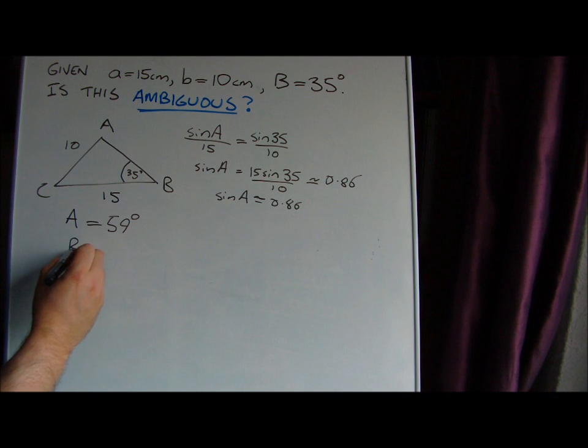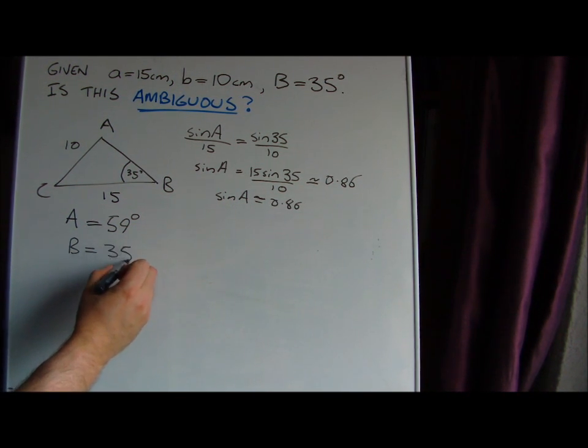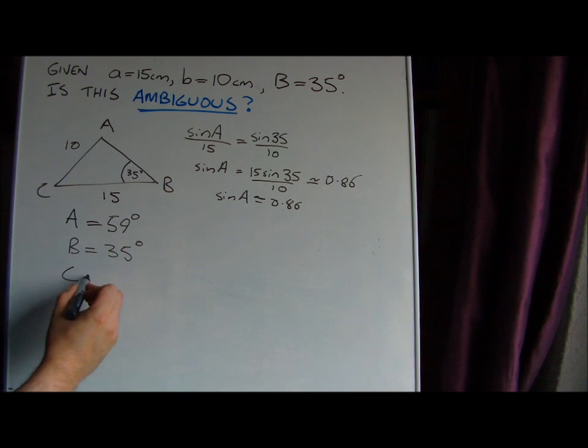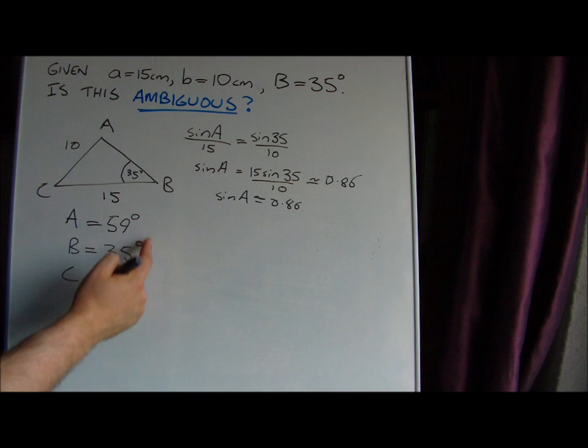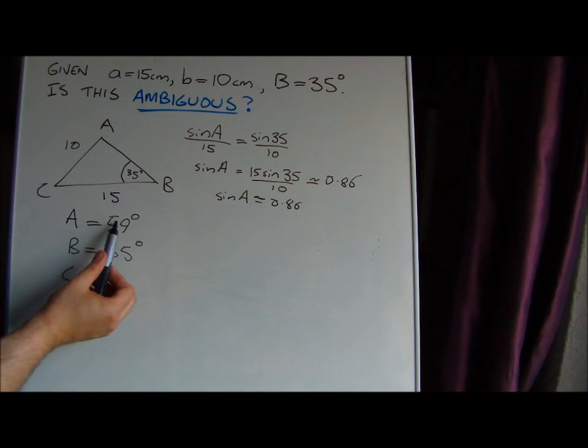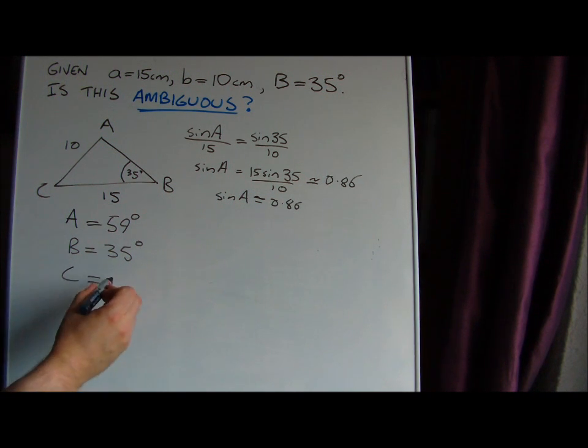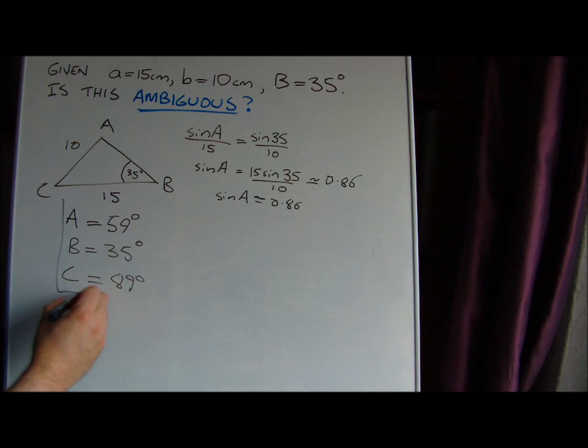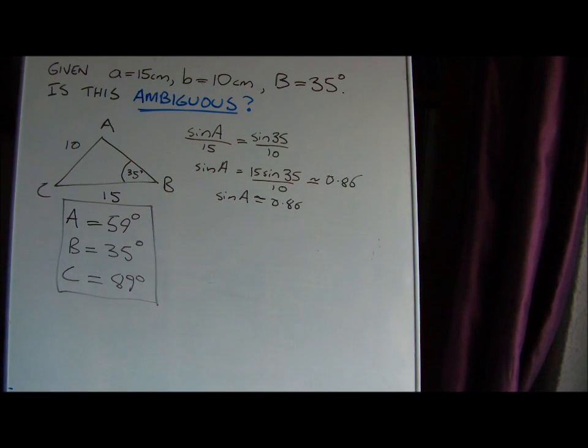That means we're given angle B, which is 35 degrees, and we can calculate angle C by subtracting these two from 180. So 180 minus 59 minus 35 gives us angle C, which is 86 degrees. So there we go, we've got one solution for this triangle. We can always get one solution at least.